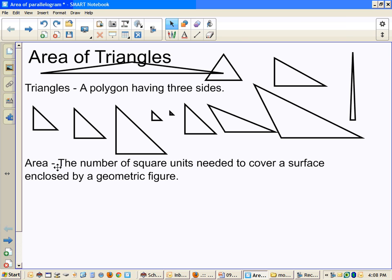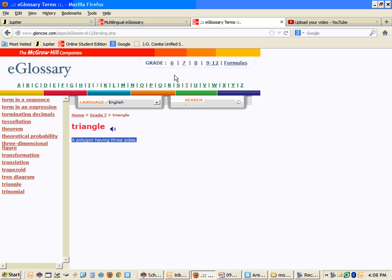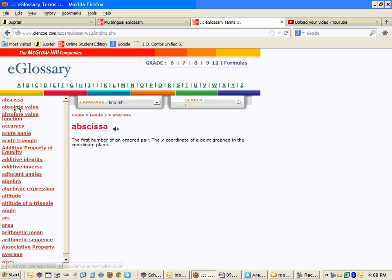And then, again with Area, Area is the number of square units needed to cover a surface by an enclosed geometric figure. Now, not only did I say that, I don't have it here anymore, so, here, Area, I think I'm going to name this guy Steve, and according to Steve, Area is the number of square units needed to cover a surface enclosed by a geometric figure.